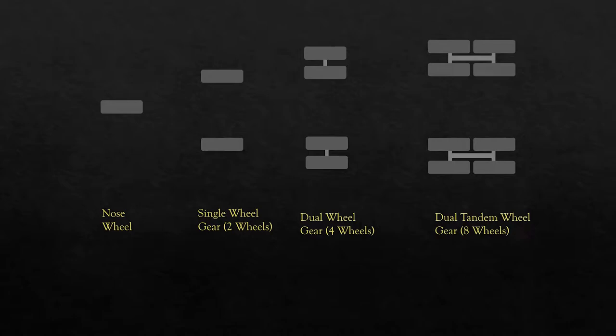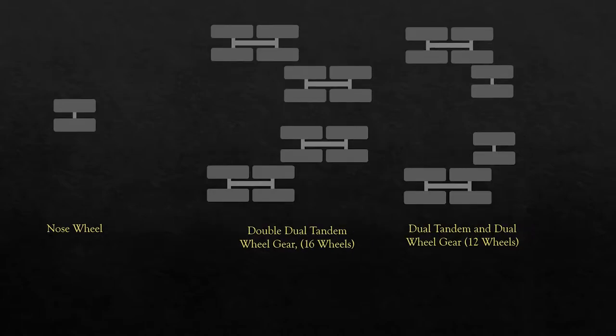Then we have dual tandem wheel gear with a total of eight wheels — four wheels on each side. Heavier aircraft may have more wheels. We also have the double dual tandem wheel gear, which has eight wheels on the right and eight wheels on the left, with two tandems on each side, making a total of 16 wheels.